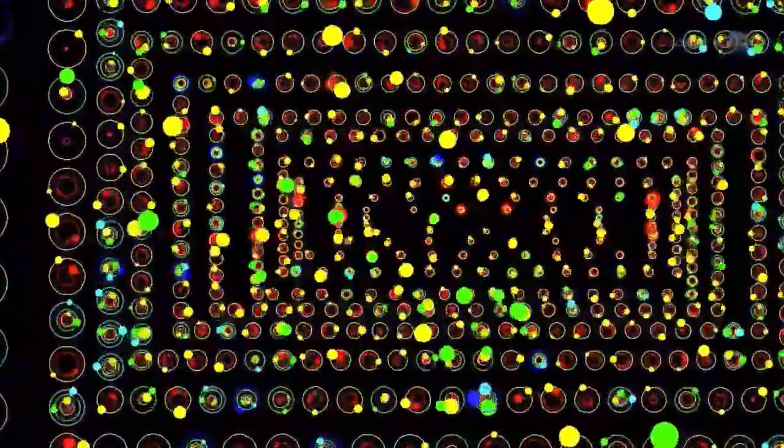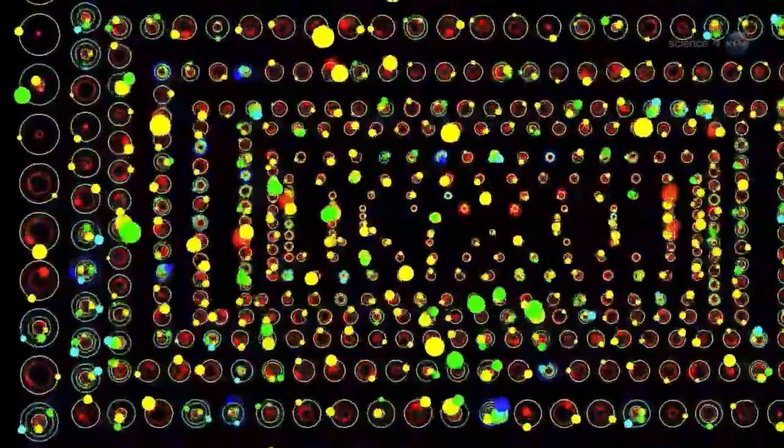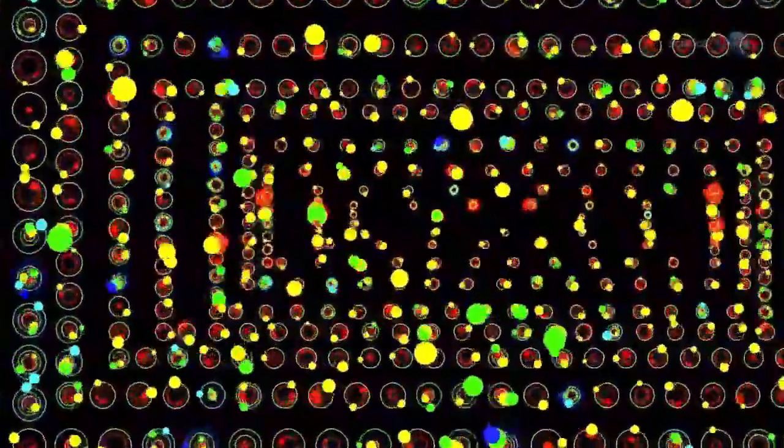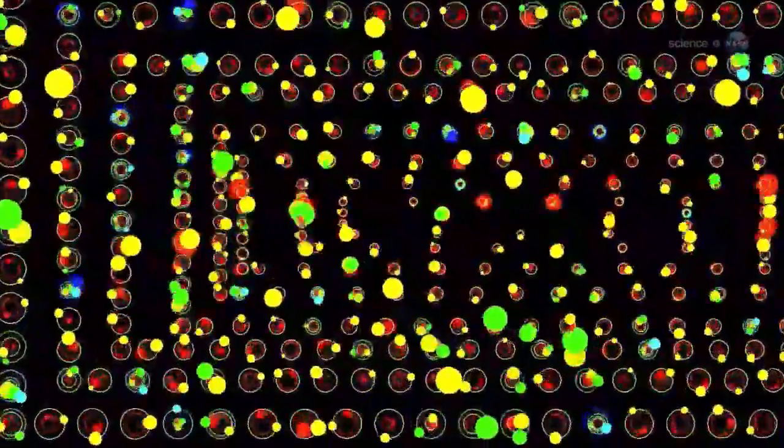All of the newly discovered worlds are located in multi-planet systems. Nearly 95% of the planets are smaller than Neptune, that is, less than four times the size of Earth. This is a marked increase in the known number of relatively small planets.